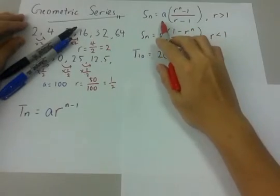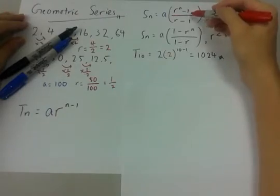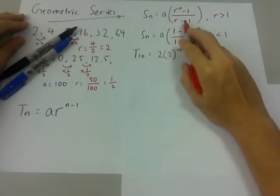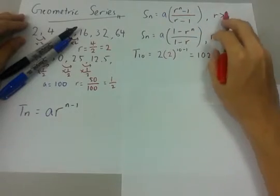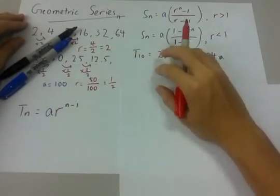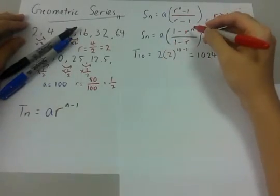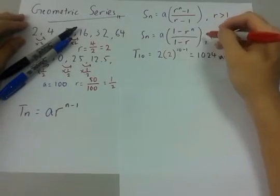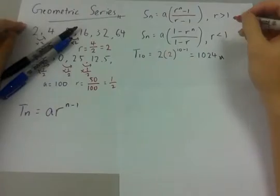The first formula only applies when the ratio, the common ratio, is larger than 1. Sn equals to A times (R to the power of N minus 1) over (R minus 1). The second formula for Sn is A times (1 minus R to the power of N) over (1 minus R), only when R is less than 1.